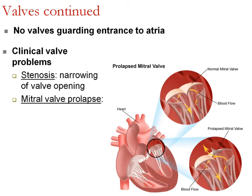You may have noticed there are no valves where the veins feed into the atria. When the atria contract, the muscle around where the vena cava feed in contracts and basically pinches off those vessels, so blood moves into the atrium and doesn't go back out through the vena cava.